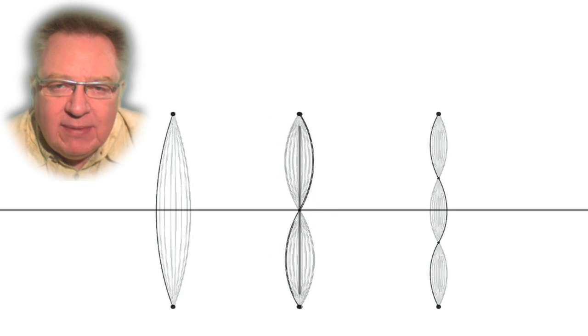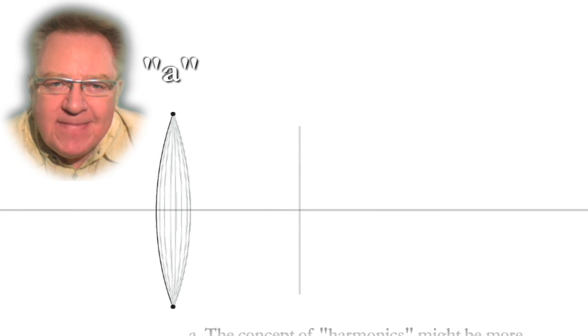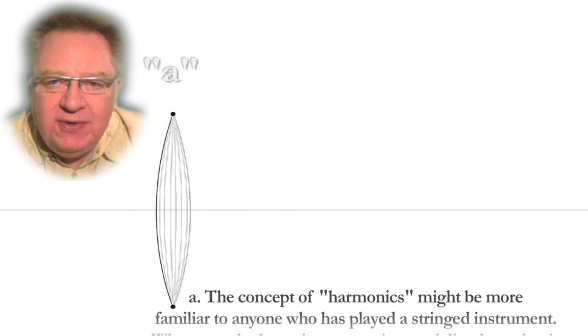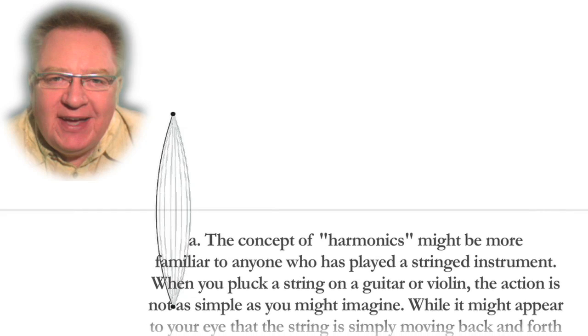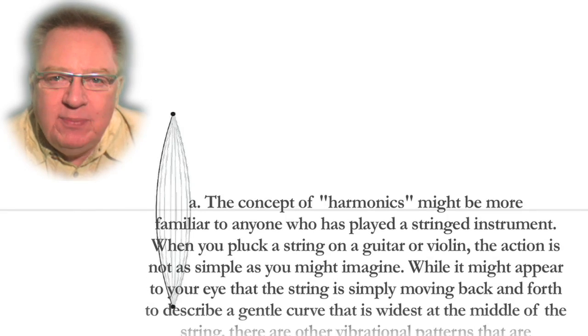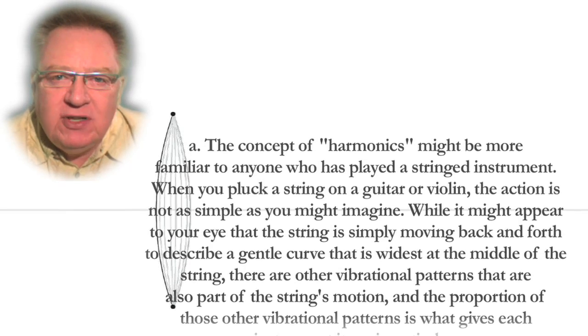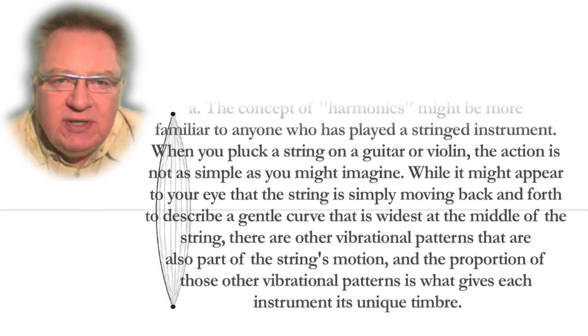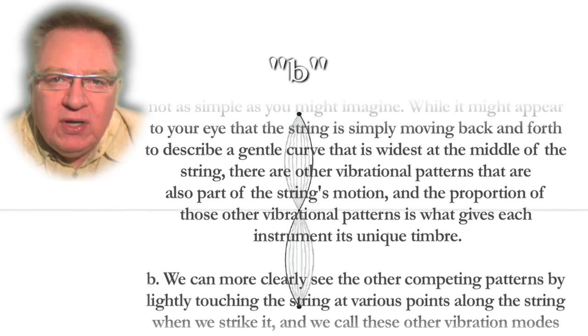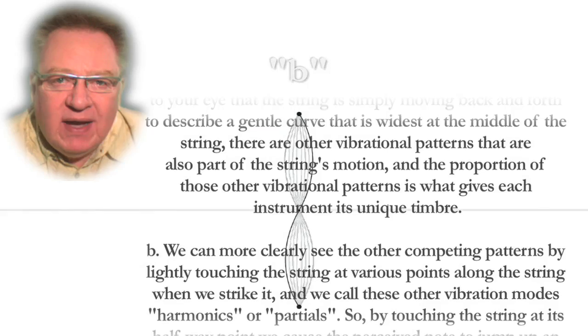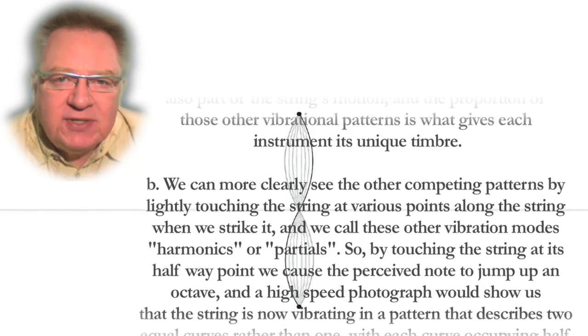Persons familiar with my book will recognize the diagrams we're looking at here. The three images that we're looking at were accompanied by this text. Diagram A. The concept of harmonics might be more familiar to anyone who's played a stringed instrument. When you pluck a string on a guitar or violin, the action is not as simple as you might imagine. While it might appear to your eye that the string is simply moving back and forth to describe a gentle curve that is widest at the middle of the string, there are other vibrational patterns that are also part of the string's motion. And the proportion of those other vibrational patterns is what gives each instrument its unique timbre.